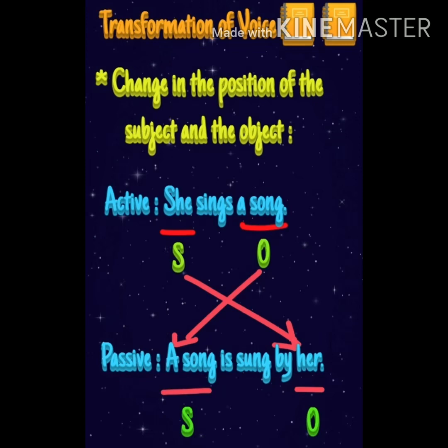Transformation of voice. The first rule is to identify the subject, object, and main verb. Example: 'She sings a song.' 'She' is the subject, 'sings' is the verb, and 'a song' is the object. Now swap: change subject with object. 'She' will become 'her' and 'a song' will become the new subject. Passive voice: 'A song is sung by her.'